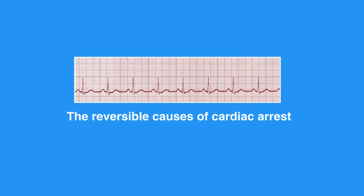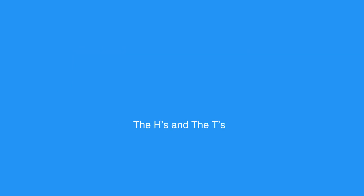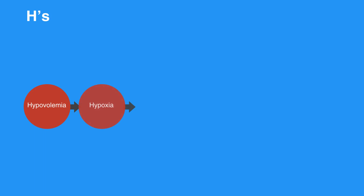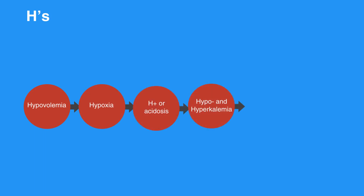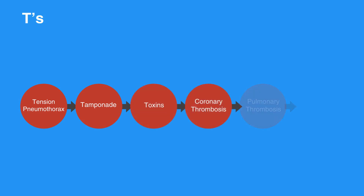The reversible causes of cardiac arrest are the H's and the T's. The H's include hypovolemia, hypoxia, H+ or acidosis, hypo- and hyperkalemia, hypoglycemia, and hypothermia. The T's include tension pneumothorax, tamponade, toxins, coronary thrombosis, pulmonary thrombosis, and unrecognized trauma.